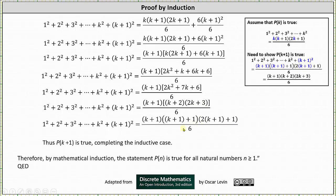Now that we've done this, we can say that P(k+1) is true, completing the inductive case. Therefore by mathematical induction the statement P(n) is true for all natural numbers n ≥ 1. To write this proof, the most important part was to plan ahead and understand how to show P(k+1) is true. I hope you found this helpful.